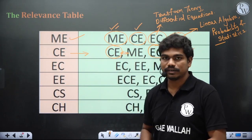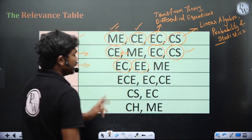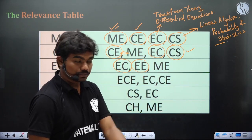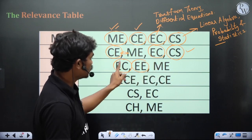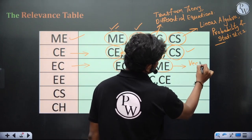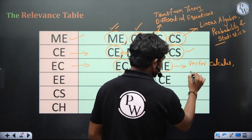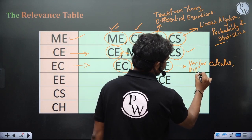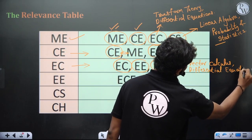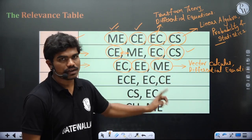Coming to EC, you can look at the equivalence between electronics and electrical, along with mechanical, for a few parts of differential equations and vector calculus — there is good overlap between EC and mechanical here. You can go for EC along with mechanical for vector calculus and differential equations. However, there are no numerical methods in EC, so please don't spend time doing numerical methods questions from mechanical if you are an EC or EE student — you don't get that in your exam.